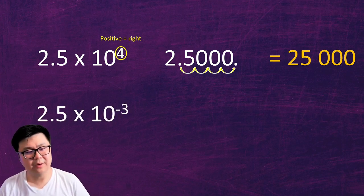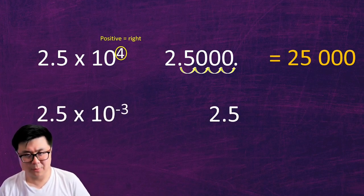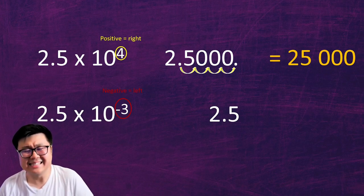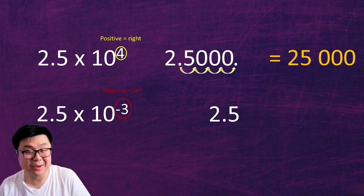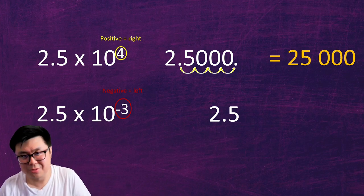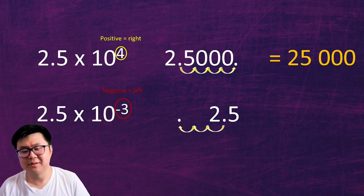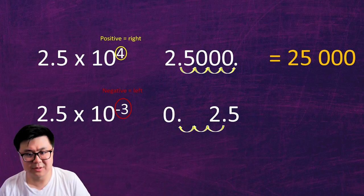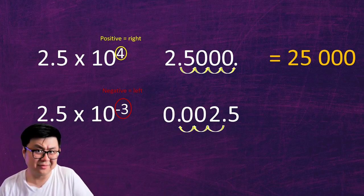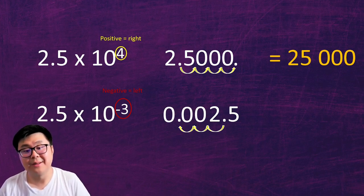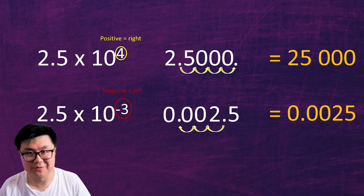Let's take a look at this one. Same thing — we write down our number in front, 2.5. This time our exponent is negative, meaning we're going to move the decimal to the left three times. There is a decimal — fill in the two slots with zeros, and put a zero in front of the decimal for good habit. So our final answer is 0.0025.